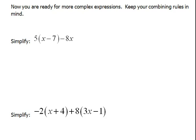That's whenever we know we have to distribute. So we're going to multiply 5 times x which is 5x and then 5 times negative 7 which is negative 35.